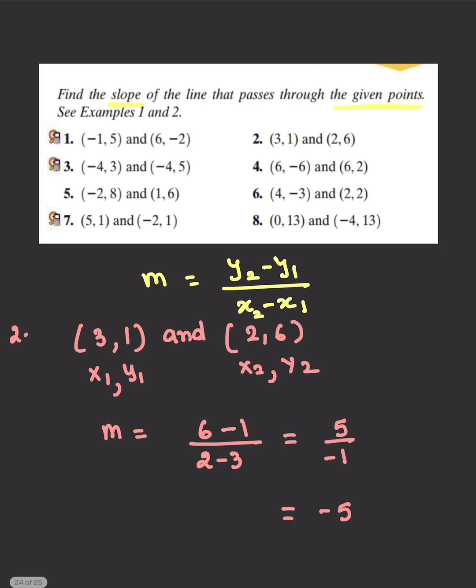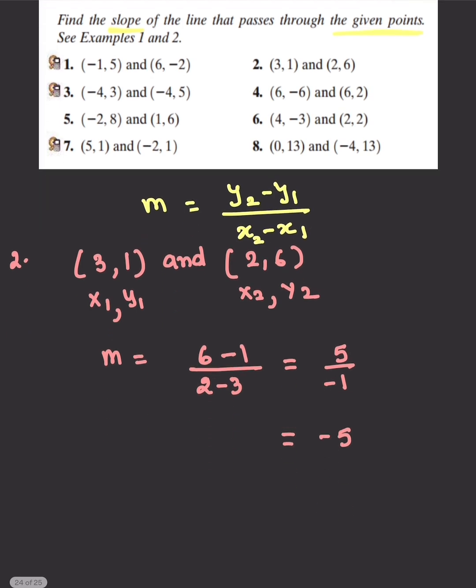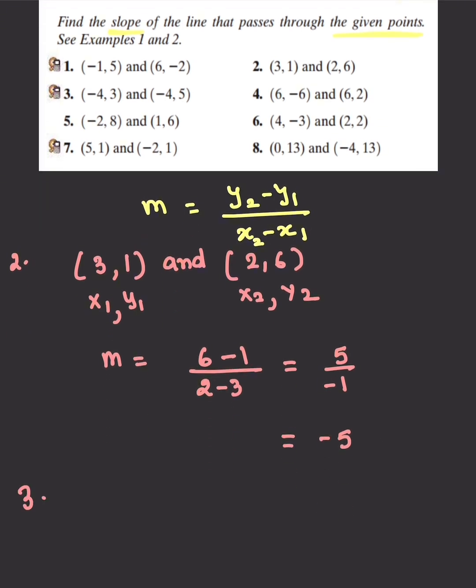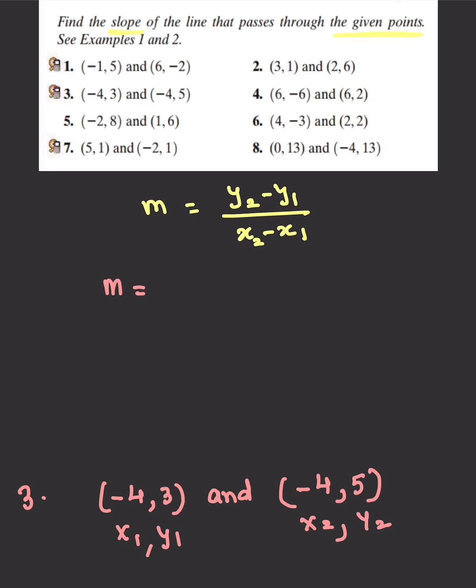Question number three here is (-4, 3) and (-4, 5). So before I start solving this question, notice that the x values are exactly the same, and what happens when your x values are exactly the same.